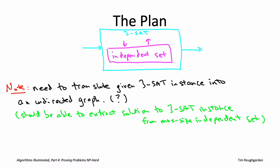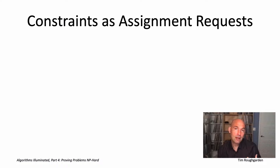Your first thought might be to transform the given 3SAT instance with n decision variables into an undirected graph with n vertices — a one-to-one correspondence between boolean variables and vertices. There are 2^n truth assignments and 2^n subsets of n vertices, so maybe we could arrange it so that independent sets correspond to satisfying truth assignments. That's a natural place to start, but it's not actually going to pan out, and we'll need a more clever way of setting up the correspondence.